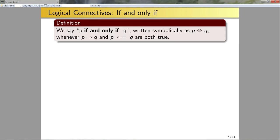Now let's look at 'if and only if.' We say P if and only if Q, written symbolically as P↔Q, whenever both P→Q and P←Q are true.